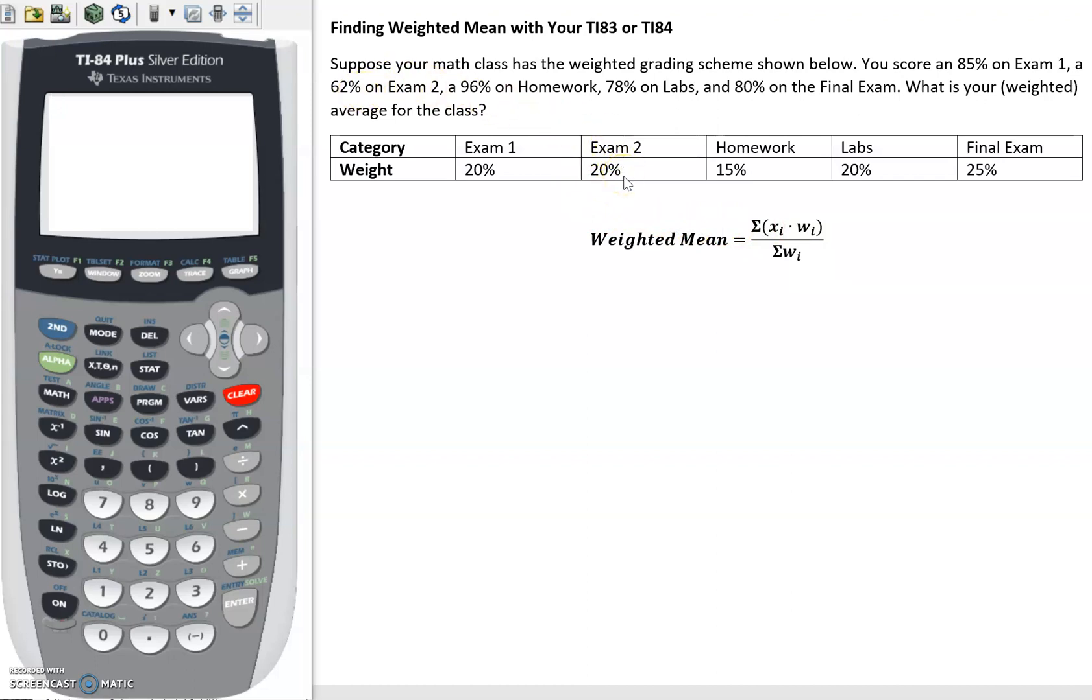We would multiply that by its weight, 20%. So we would add all of those products up and then divide by the sum of the weights. So we would just add up these categories. Now for a class it should add up to a hundred percent, but there are other situations where maybe that's not the case. So just be mindful of that bottom part.